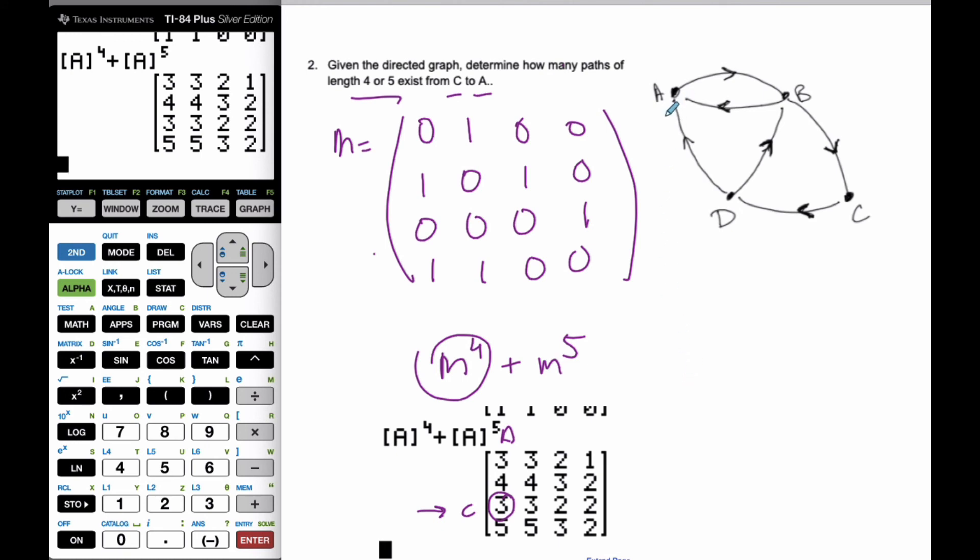And I should be more specific by saying these are probably going to be walks as opposed to paths. This should say walks because it will repeat vertices at times.